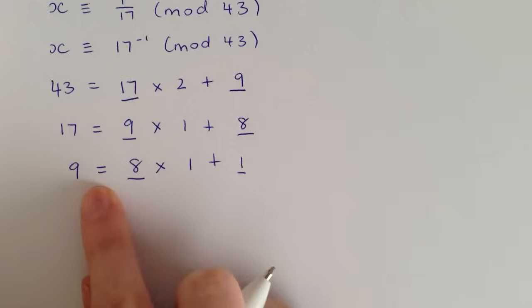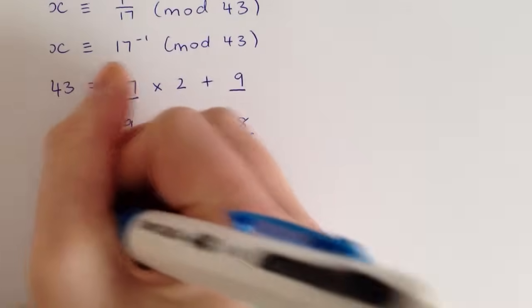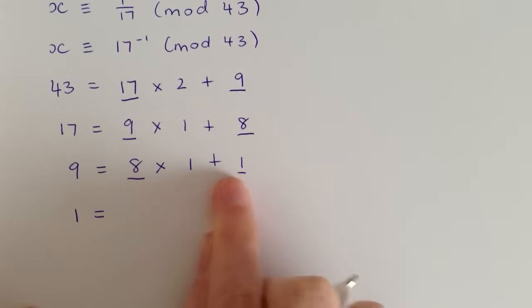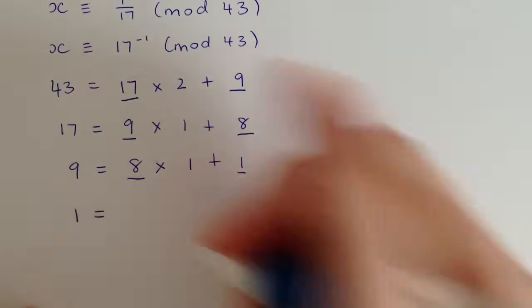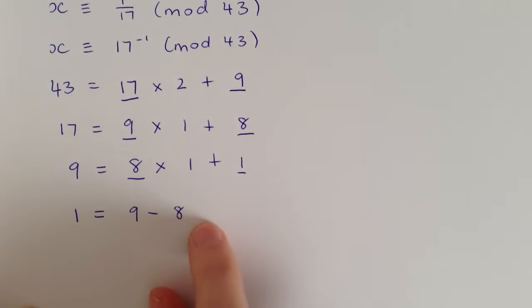So to do that, we want to write this equation here in terms of 1. So we want 1 equals, now to get that on its own, we just take this 8 times 1 over the other side. So we get 9 minus 8, and it's times 1, but we can just leave that off because it's the same as saying 8.